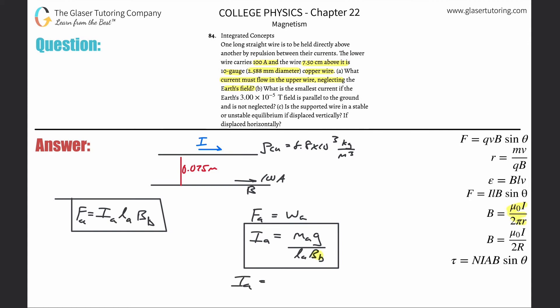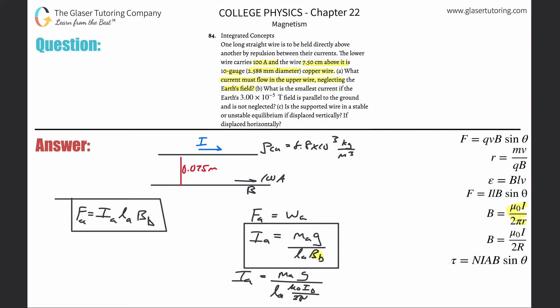The current in wire A equals the mass of A times gravity, divided by the length of A, multiplied by the permeability of free space, multiplied by the current in wire B, all divided by 2π times the distance between them. I know the distance, I know the current in I_B, 2π is a constant, and gravity is a constant.